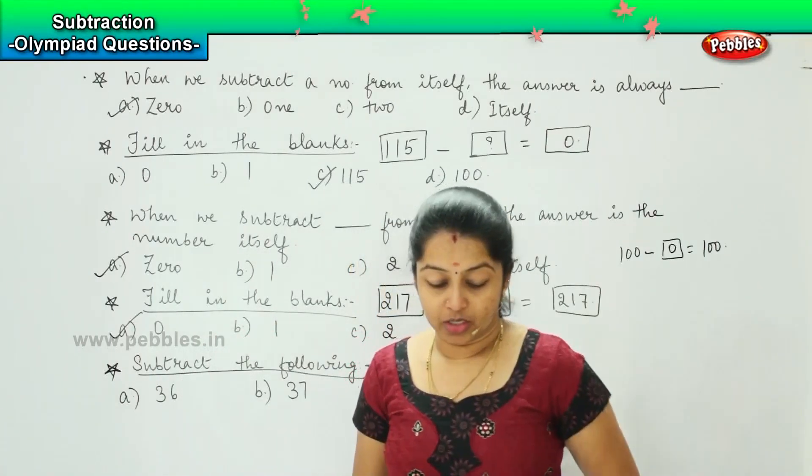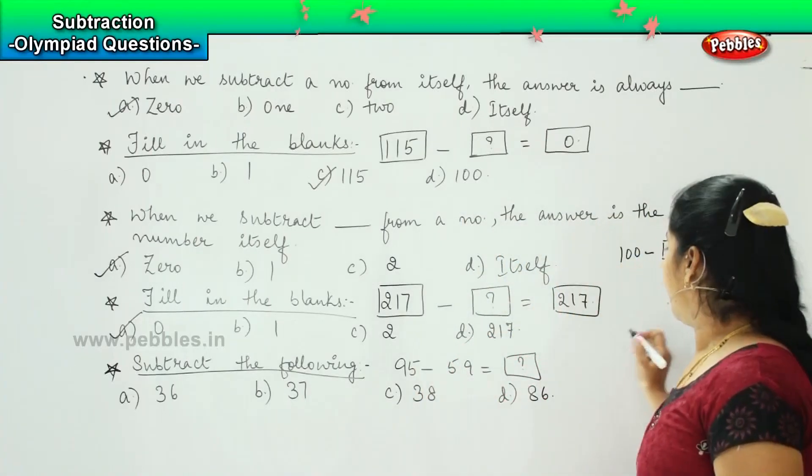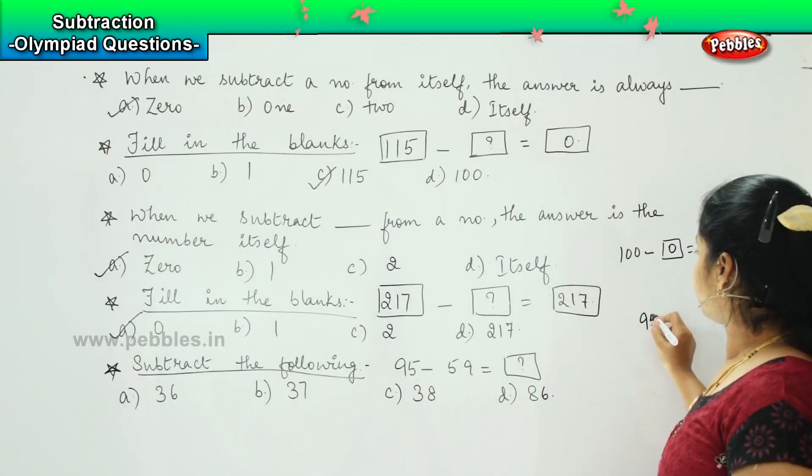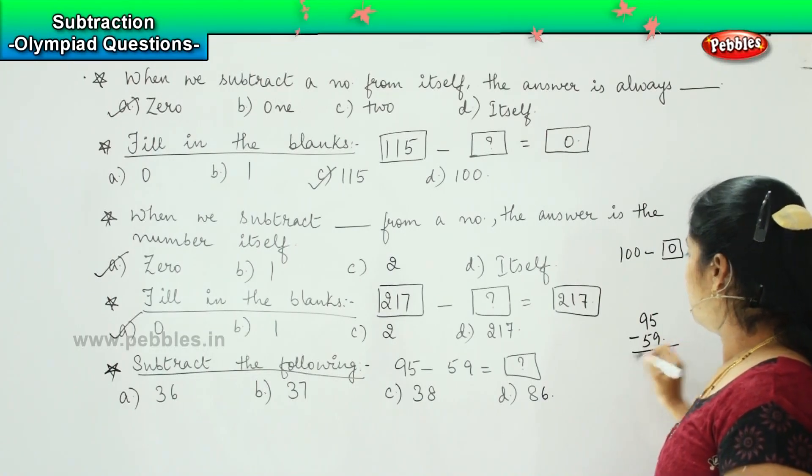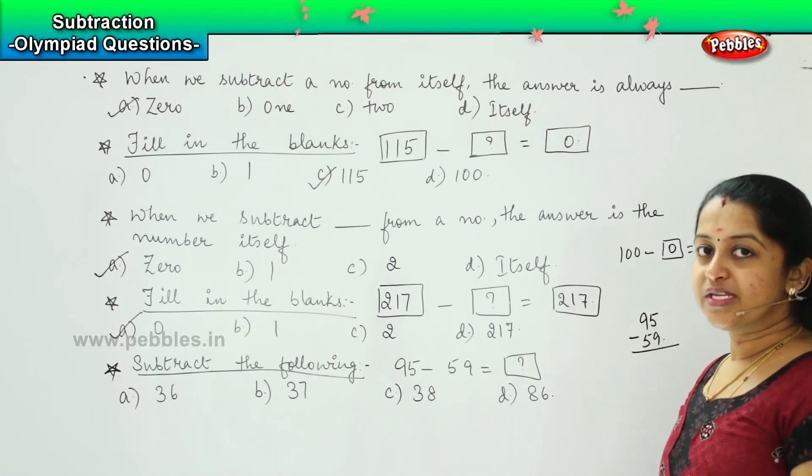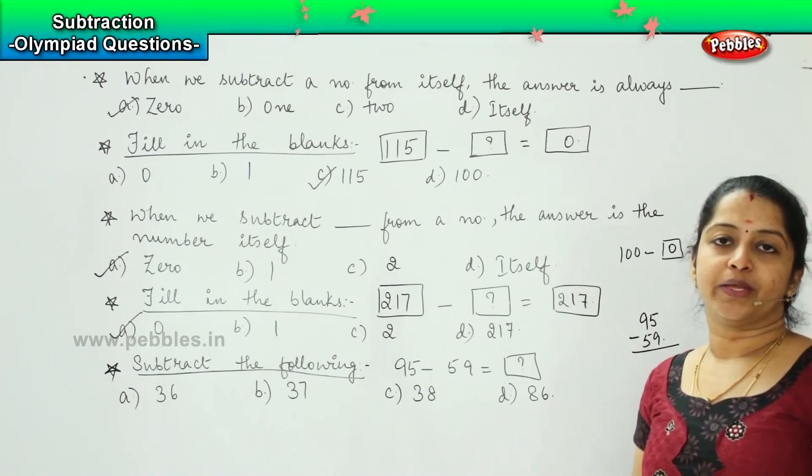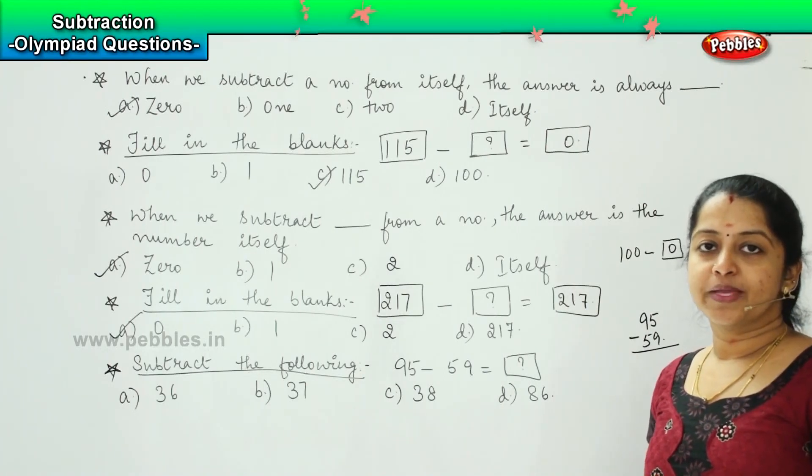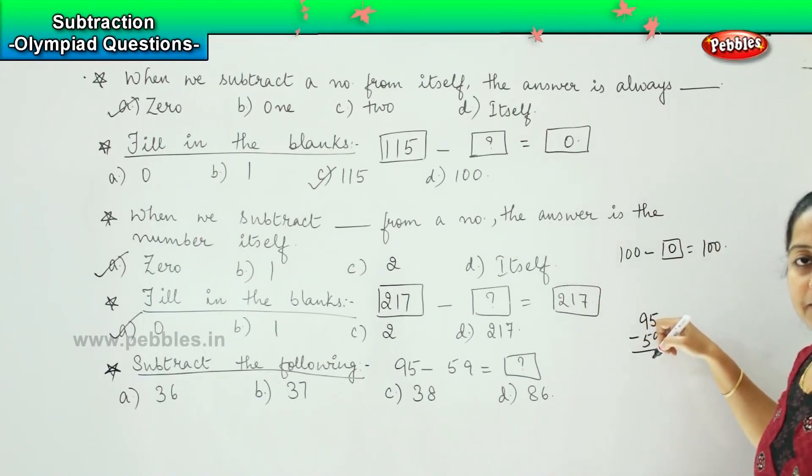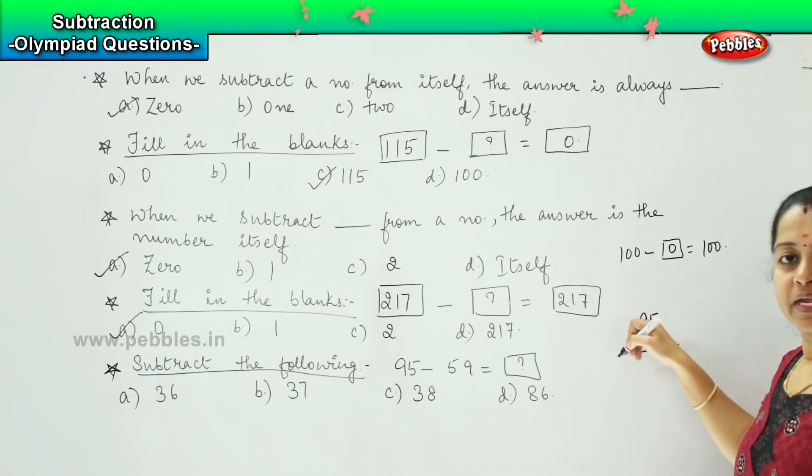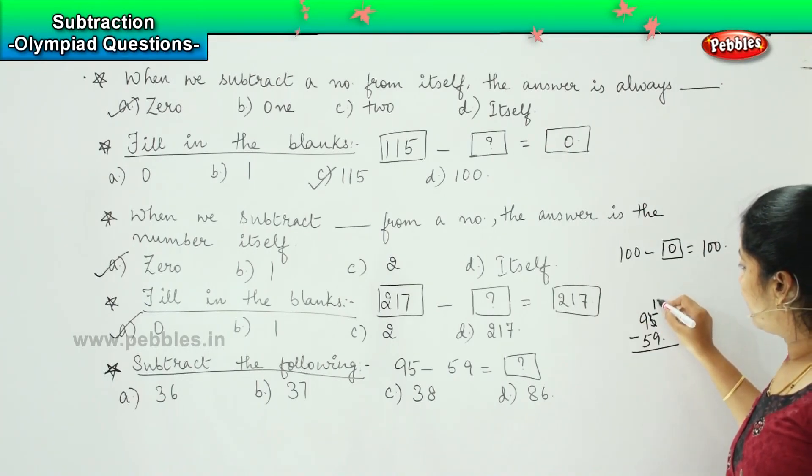Ok, so let's try to find out the answer. 95 minus 59. So what method will we use here children? Is it with regrouping or without regrouping? Very good, it is going to be with regrouping, right? So here my number above is lesser than the one given below, which means that my minuend is lesser than the subtrahend. So I am going to borrow from the tens. Fine. So it will become here 15.